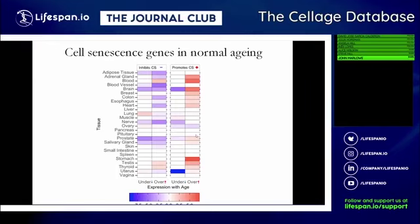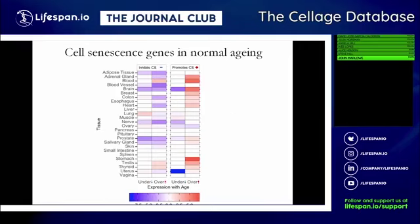Roberto noted that in vitro, a single genetic manipulation can influence the senescence phenotype, so we don't necessarily expect all of these genes to be changing in vivo — maybe just one or two is enough. The uterus is a striking exception: genes that promote cell senescence in the uterus actually tend to be down-regulated with age, the opposite of what you see in other tissues. This fits with other results we'll come back to.